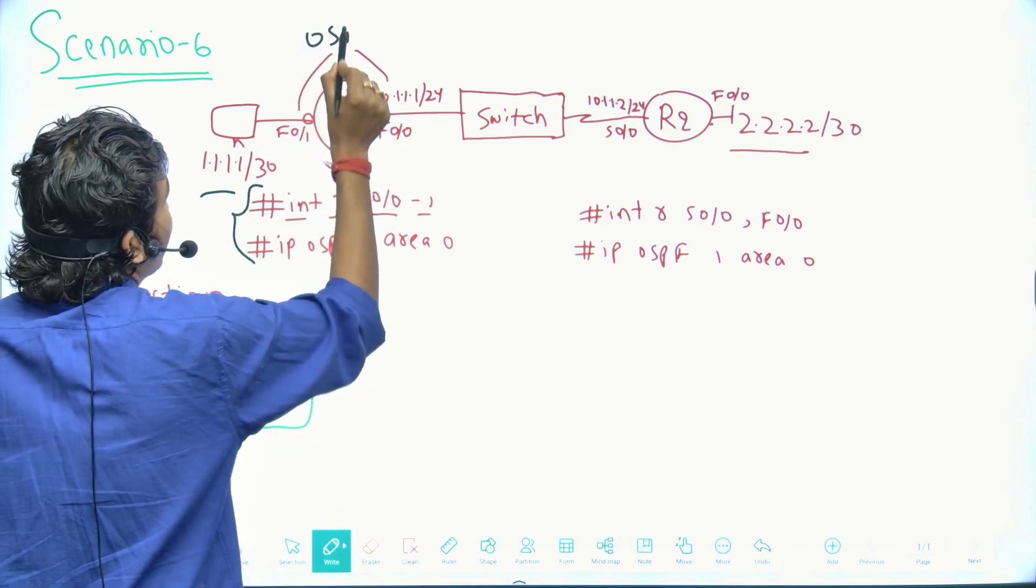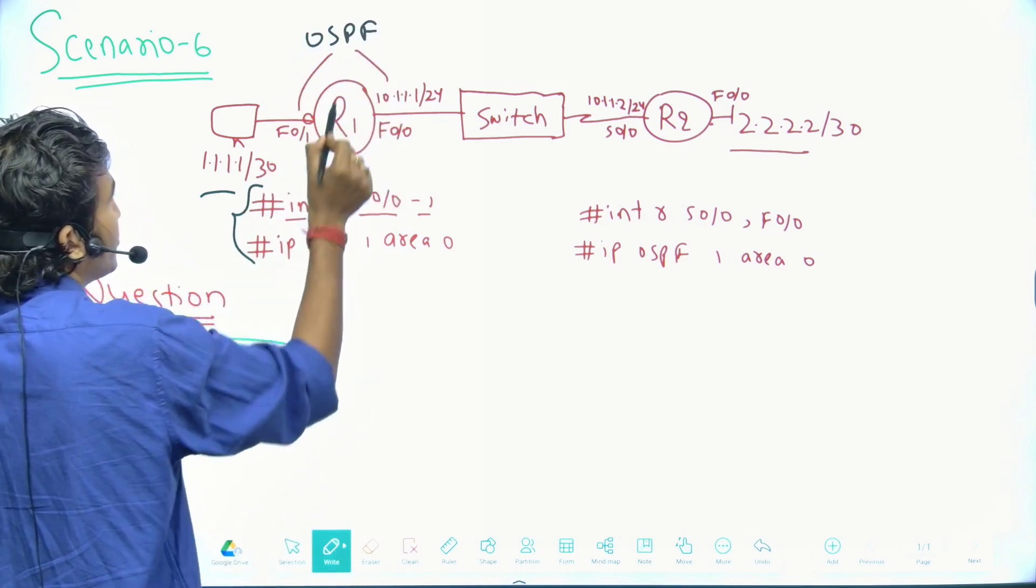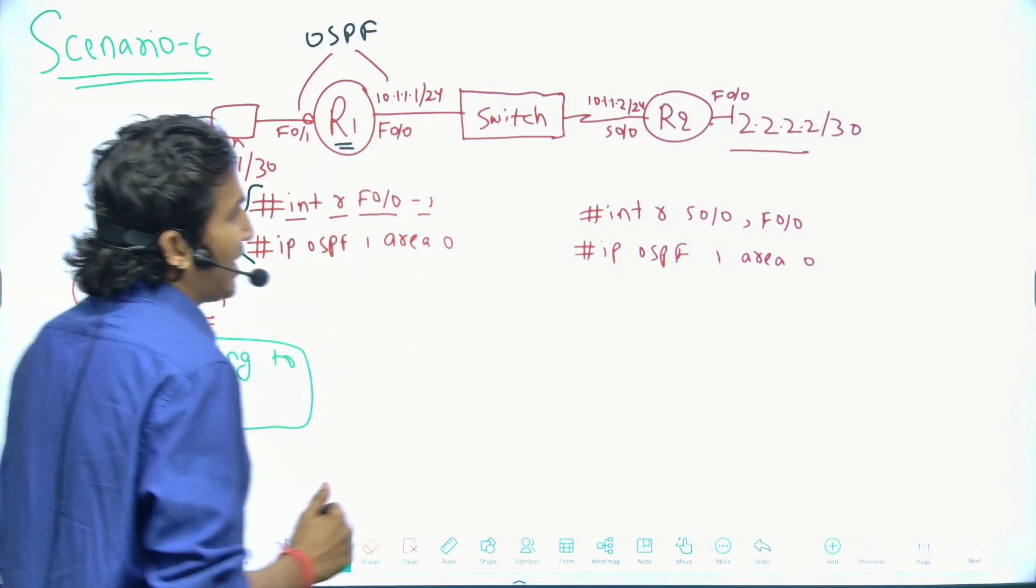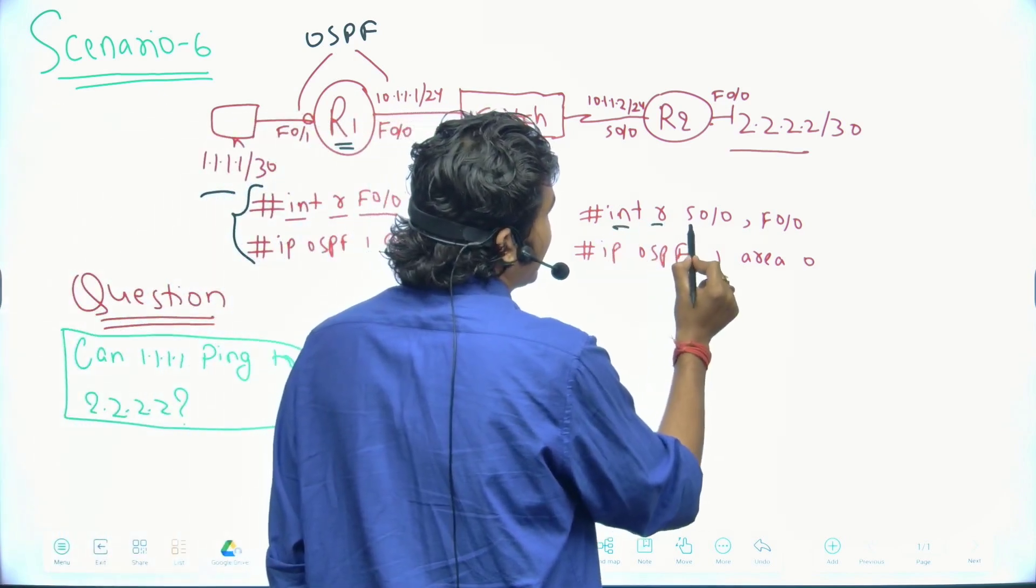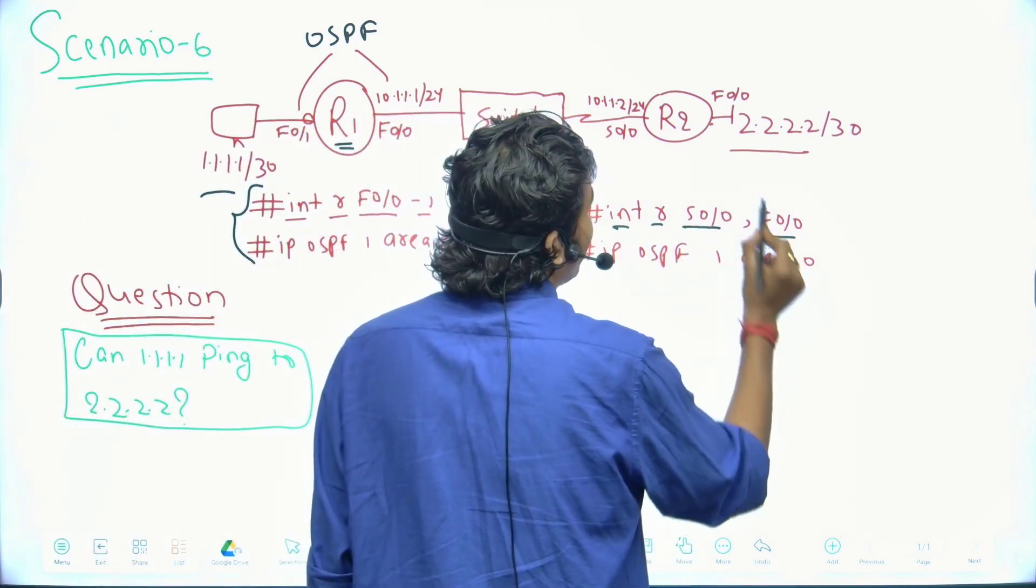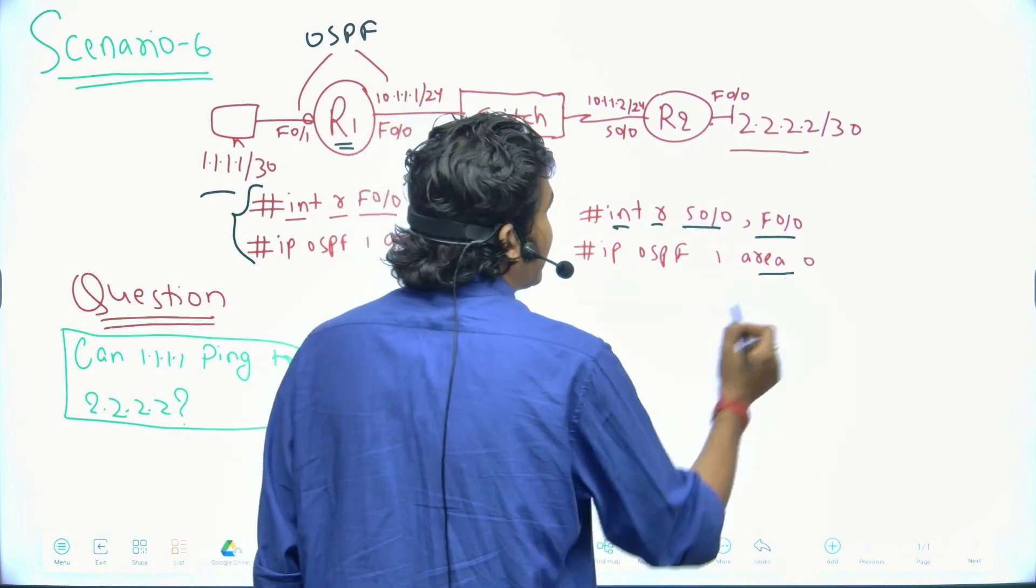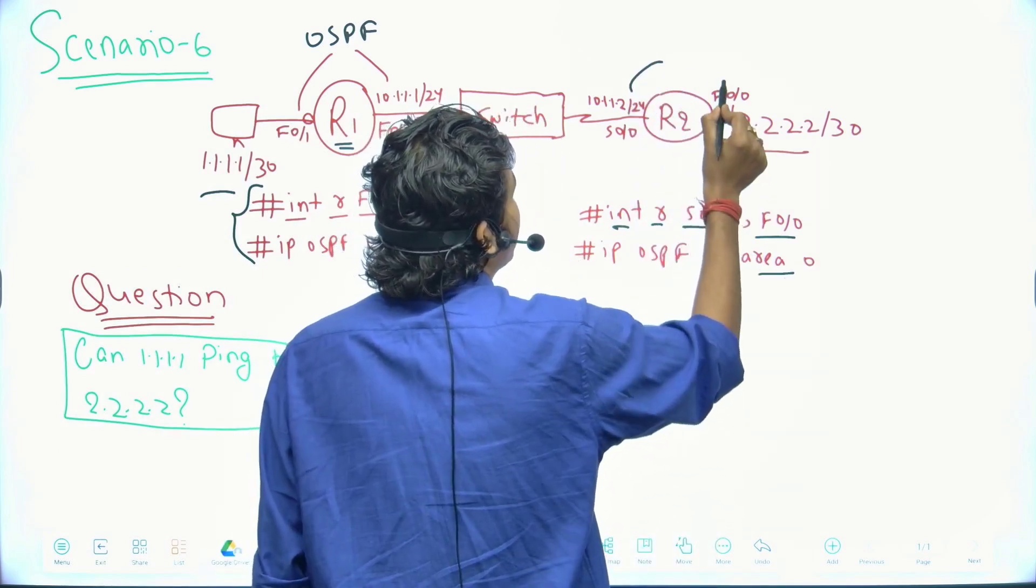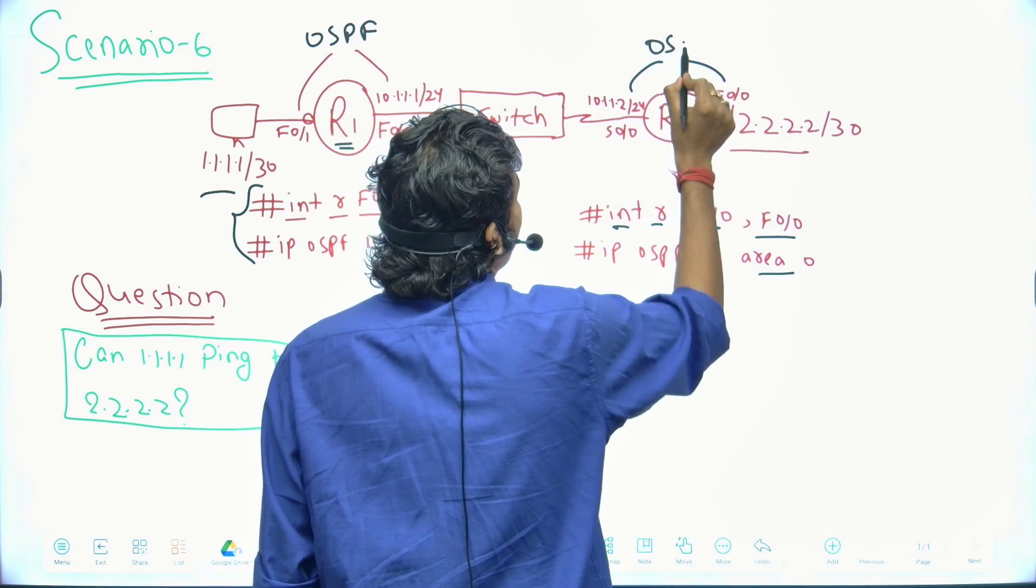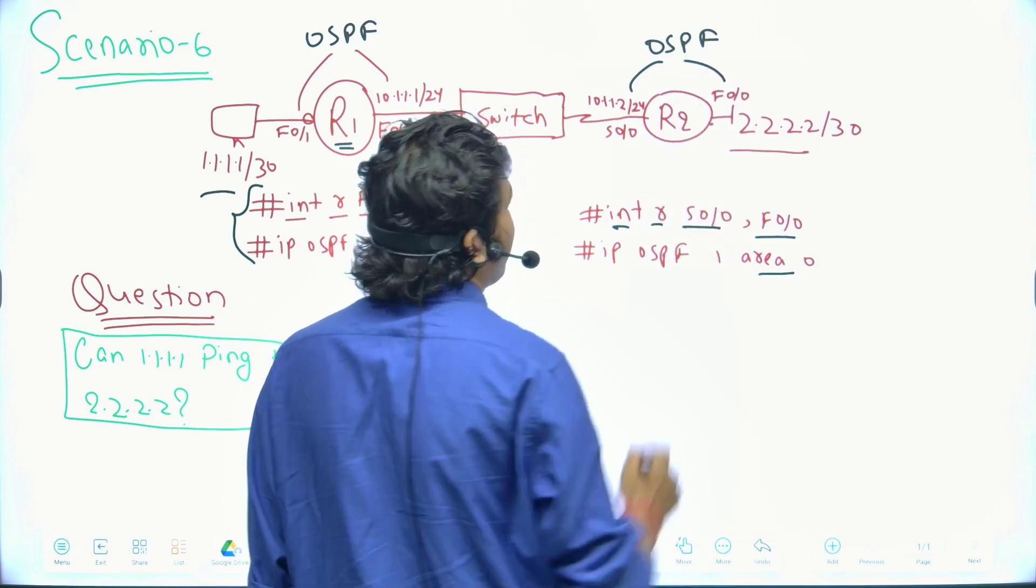And these two commands: interface range Serial 0/0 and F0/0, IP OSPF 1 area 0. These two commands are going to enable OSPF on these two interfaces of router 2, right?